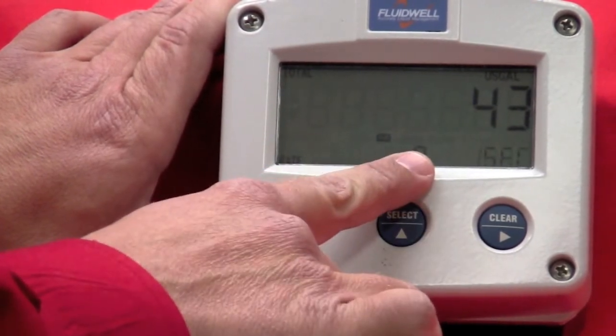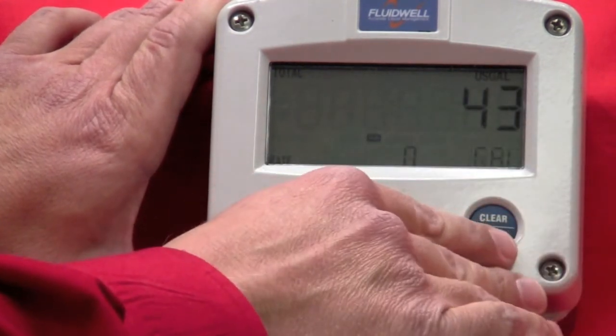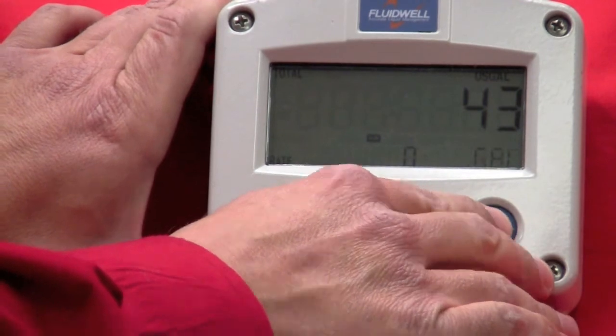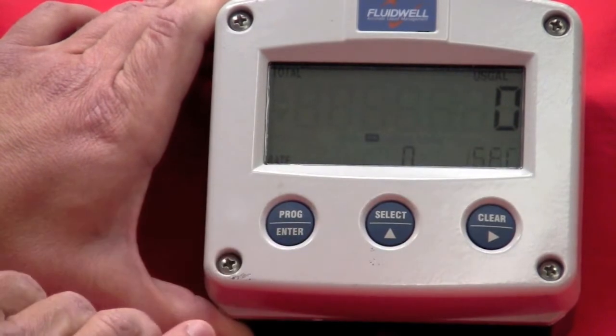If I push it again, it goes back to flow rate. To reset your totalizer while you're in the run mode, it's just push and release. I'm going to double-click the clear button, so I'll hit it once. It'll ask me to push clear to reset. If I hit it again, you'll see my total went back to zero.